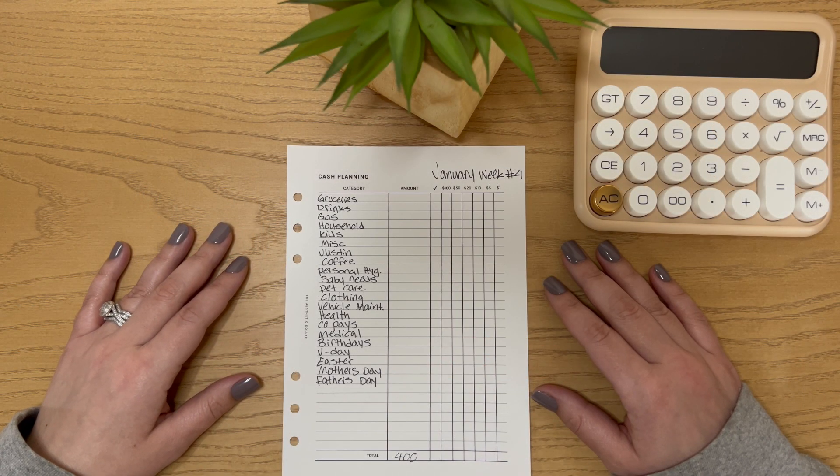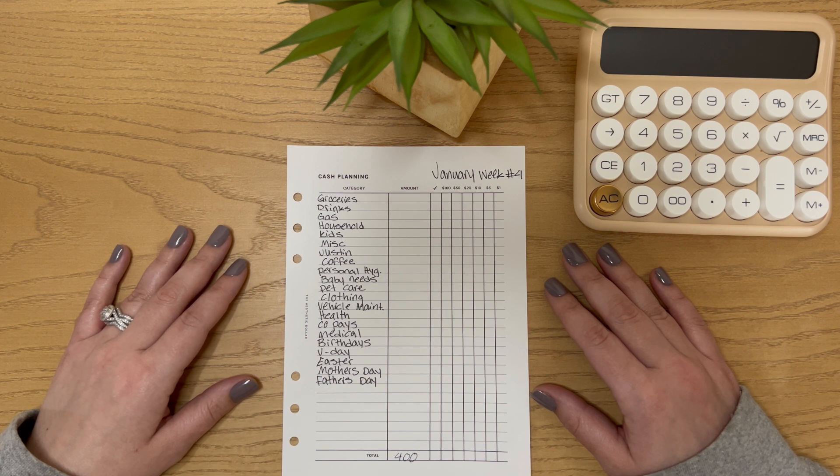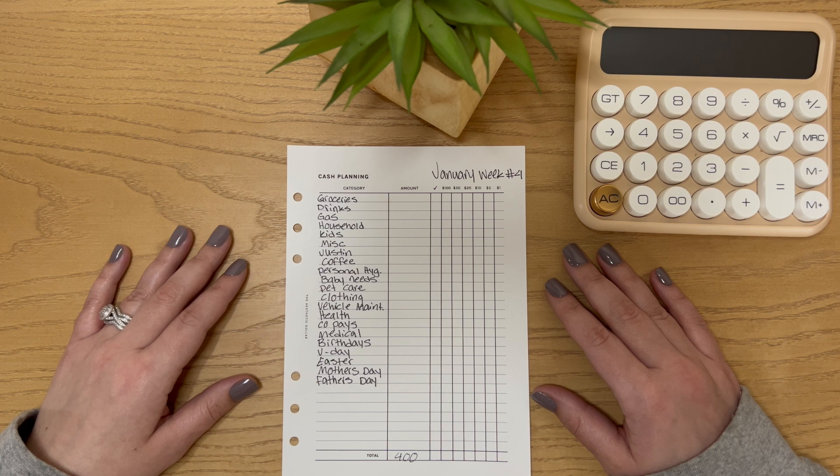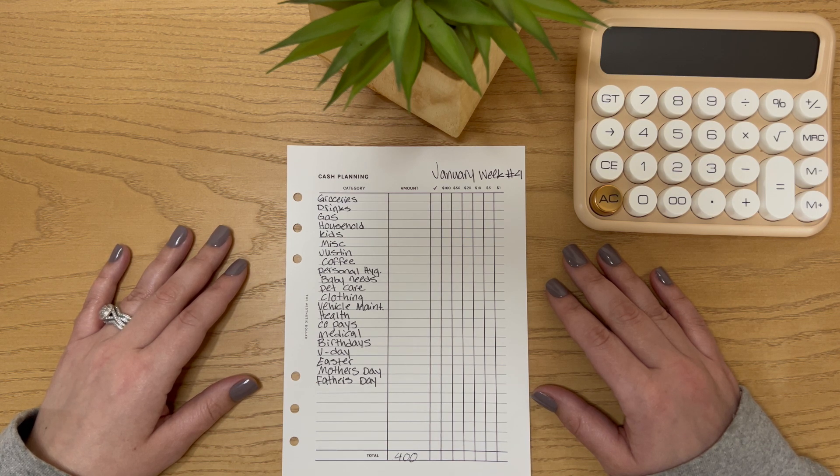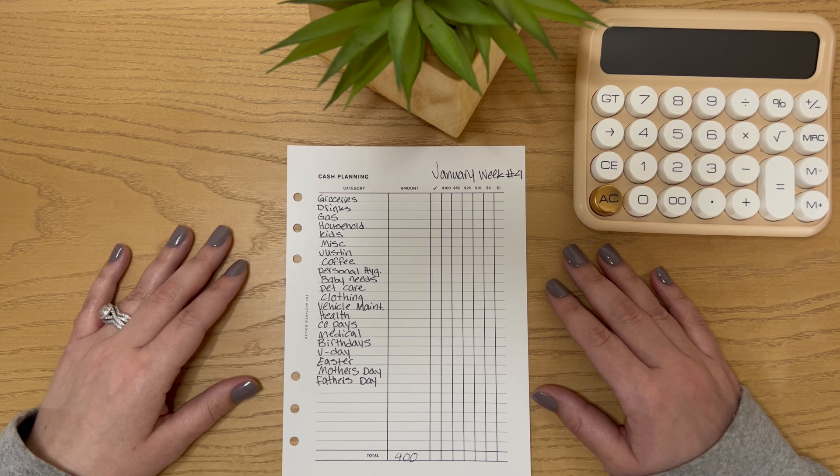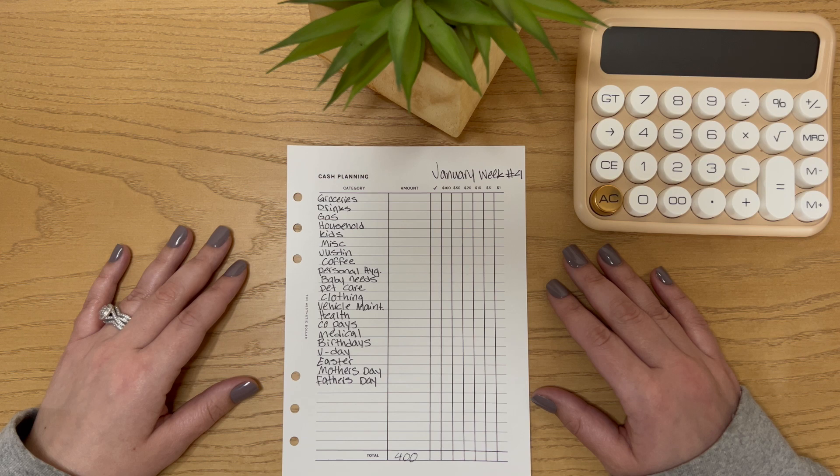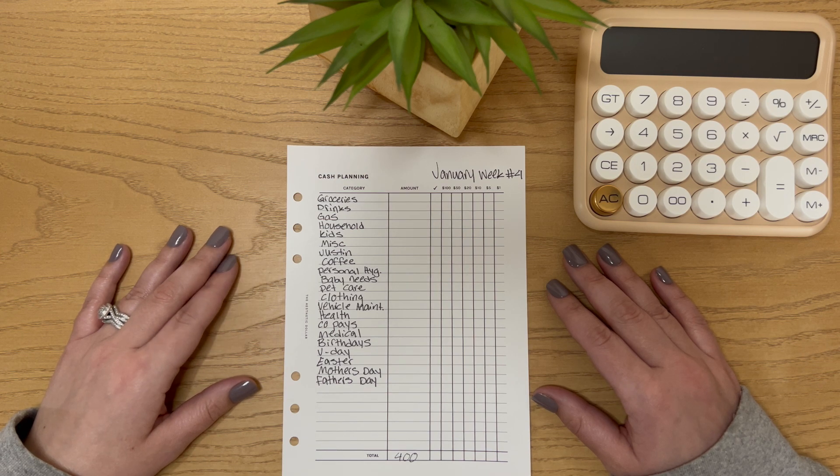Hey guys, so today I thought I would film a budget with me video and kind of go more in depth of how I come up with the denominations to put in each envelope every single week. My husband and I keep money in our bank account for our rent, car payment, fixed expenses like our utilities and credit card payments and stuff like that, and whatever is left over after making all those payments is what we pull out and put in these cash envelopes.